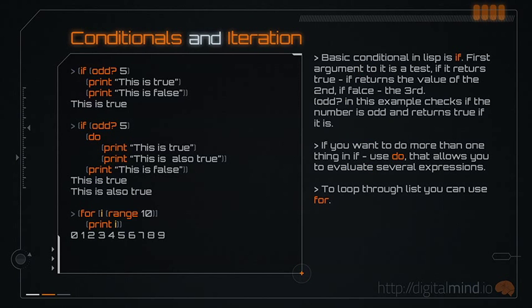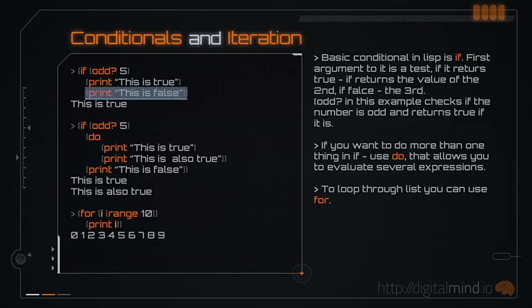The basic conditional operator in Hi is if. The first argument is a truth test. If it's true, the second argument will be evaluated; if false, the third. The third argument is optional and will default to nil if not provided. In this example, we check if the number 5 is odd, and if it is, we print 'this is true'.